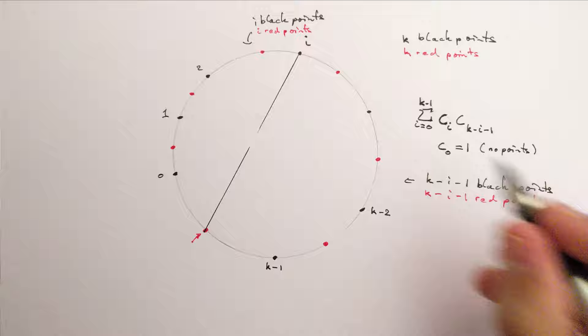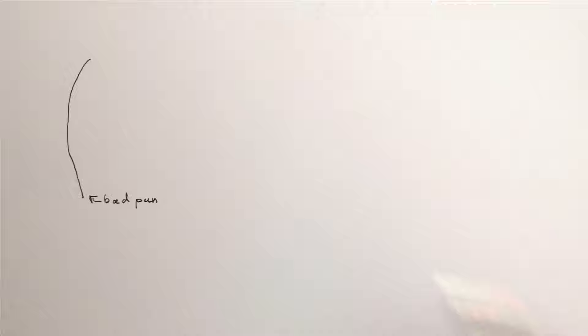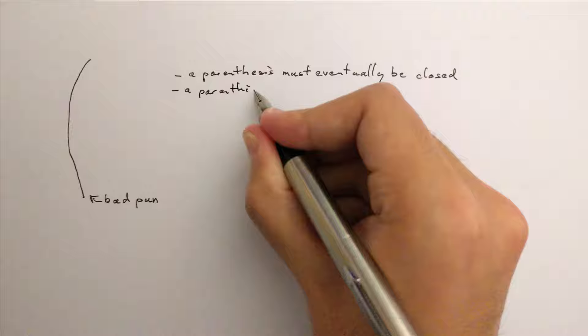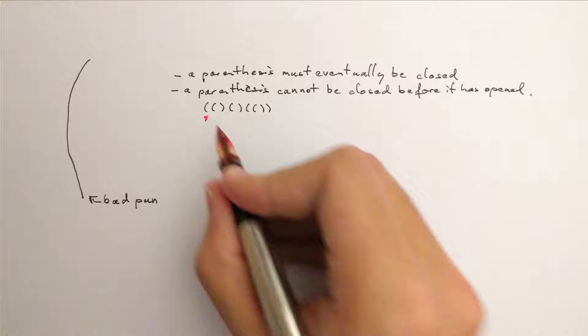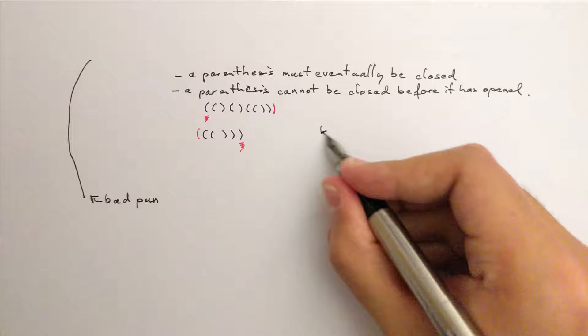Let's open a parenthesis. Parentheses obey two rules. You must close them, and you cannot close them before you open them. For instance, this is not correct. We have a parenthesis that doesn't close. And here, we have a parenthesis that was never opened. How many ways are there to correctly write k pairs of parentheses?